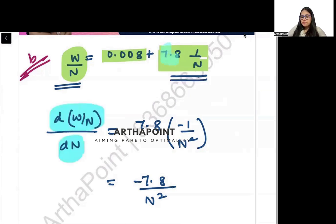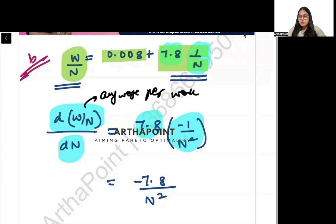It will be 7.8 is a constant, differentiation of 1 by N will be minus 1 by N squared.